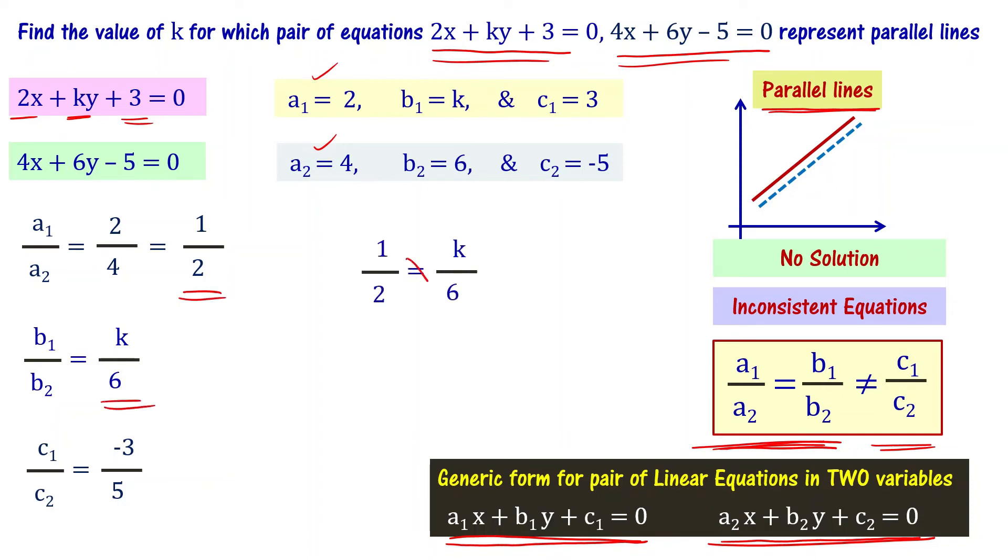Cross multiplication: 6 into 1 equal to k into 2. And then, 2k equal to 6, k equal to 6 by 2, that is equal to 3.